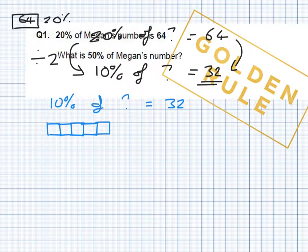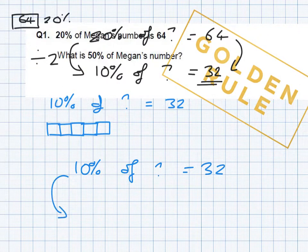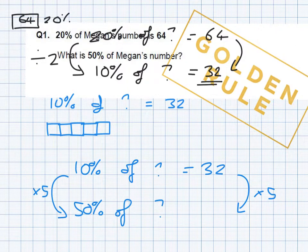Another way of expressing that like we've done before might be 10% of our number is 32. How do I get from 10% to 50%? Well times 10% by 5. So I have to multiply the value by 5 as well. So 10% times 5 is 50%. So I times 32 by 5 to work out what 50% of that number is.